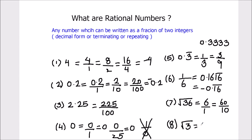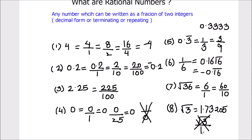Next we have the square root of 3, which is approximately 1.73205. It is non-terminating and non-repeating. Anything with a square root sign that cannot be further simplified is not a rational number — so this is an irrational number. Any number under a square root sign that results in a non-terminating, non-repeating decimal is an irrational number. So root 3 is not a rational number.